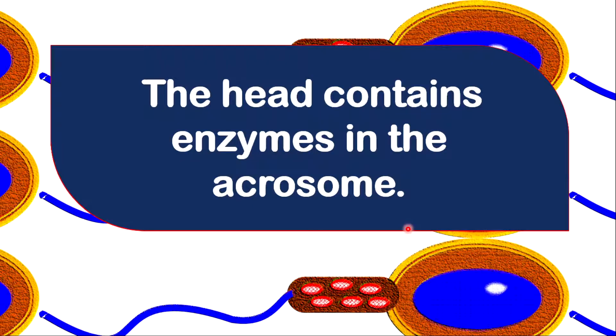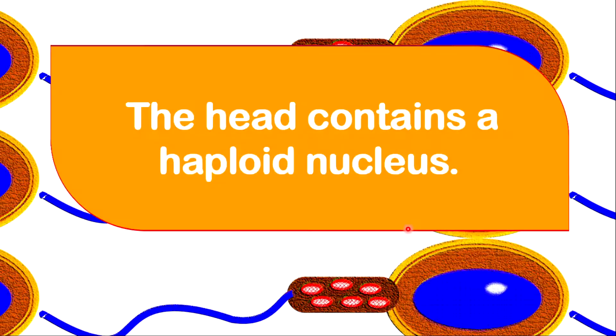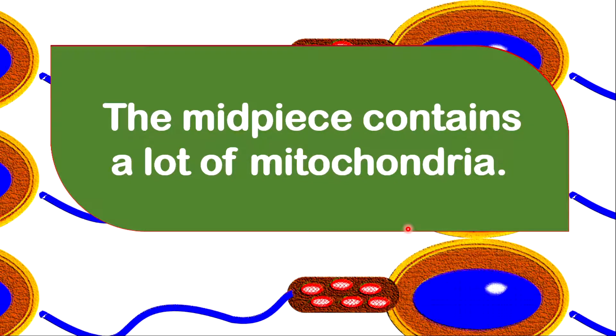The head of the sperm contains enzymes that are produced in the acrosome. The head contains haploid nucleus, half the number of chromosomes. The midpiece is where you find a lot of mitochondria needed for energy production.